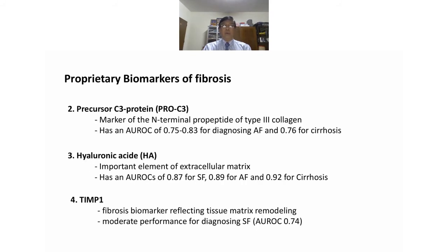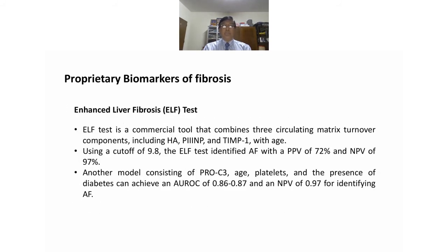The ELF (Enhanced Liver Fibrosis) test is a commercial tool that combines three circulating matrix turnover compounds: hyaluronic acid, P3NP, and TIMP-1 with age. Using a cutoff of 9.18, the ELF test identifies advanced fibrosis with a positive predictive value of 72% and negative predictive value of 97%.